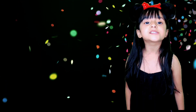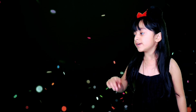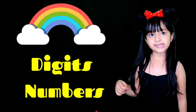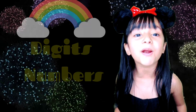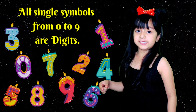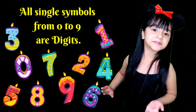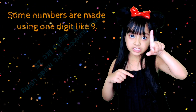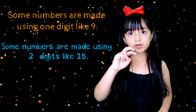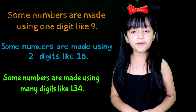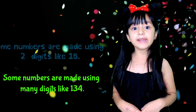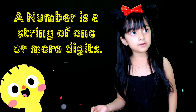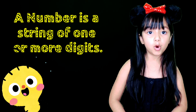To understand place value, you need to understand the difference between digits and numbers. All single symbols from 0 to 9 are digits, and digits are used to make numbers. Some numbers are found in one digit, some are made out of two digits, and some are made with many digits. So a number is a string of one or more digits.